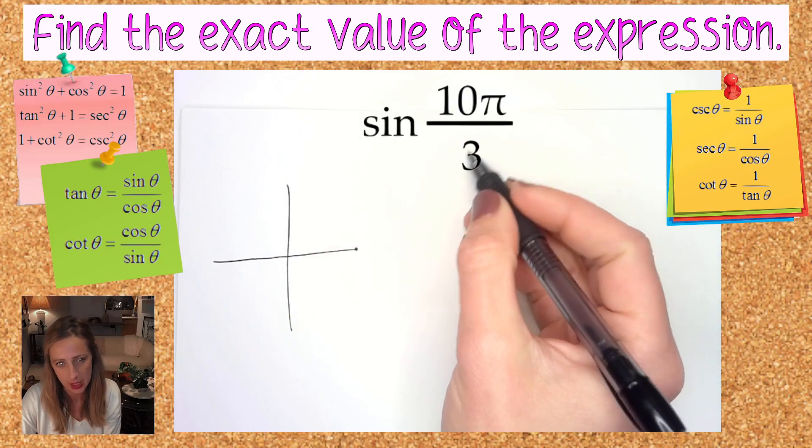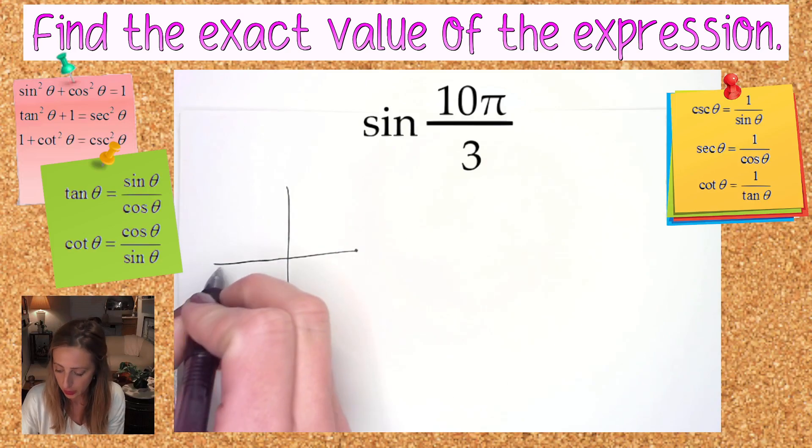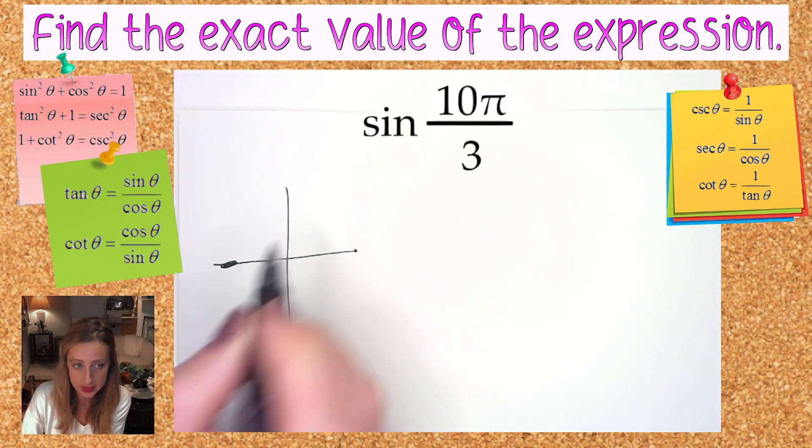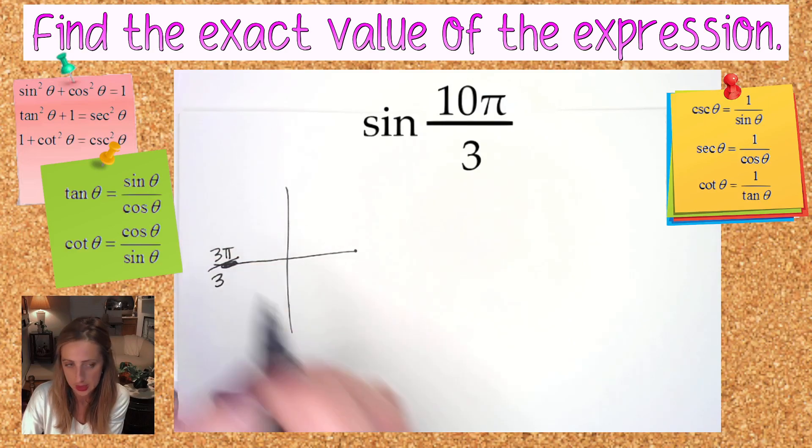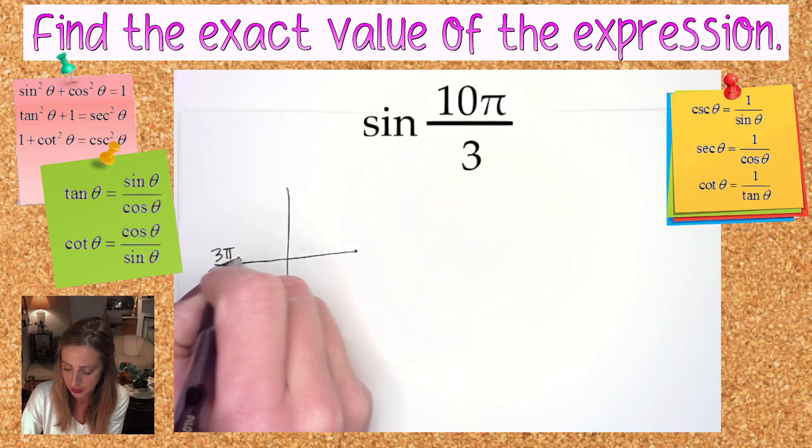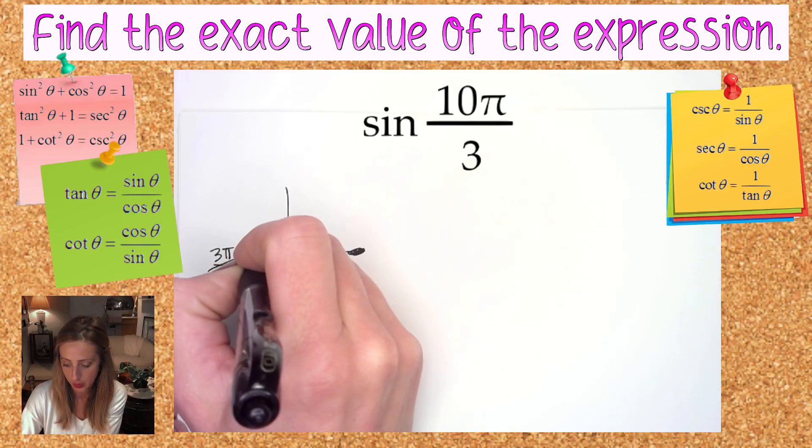I like to start by figuring out where 3π over 3 would be. 3π over 3 is going to be right over here because that is π. To me it's a great place to start from here, this spot right there, so that's 3π over 3.